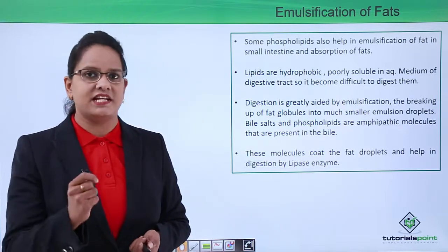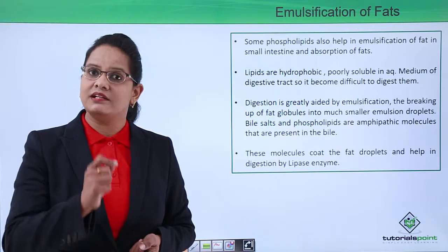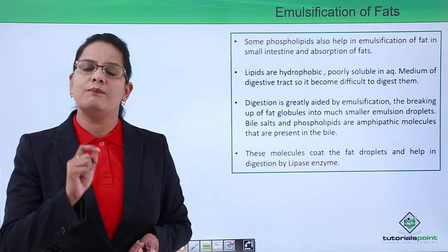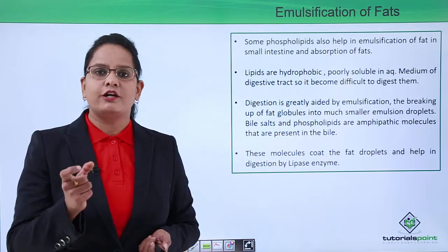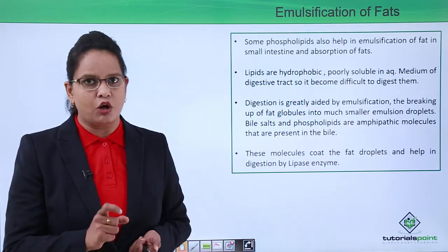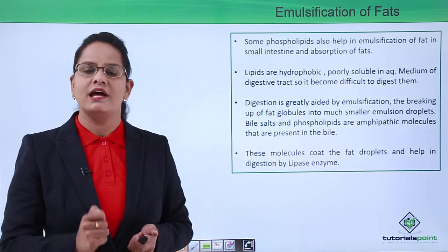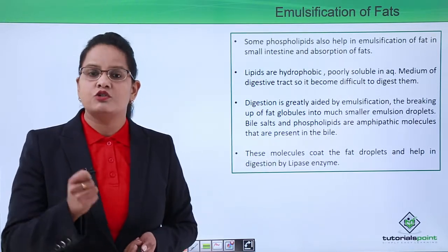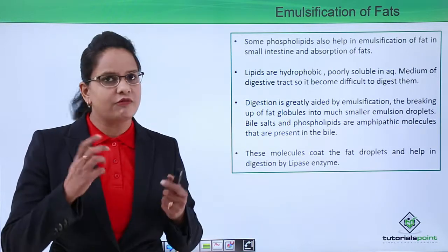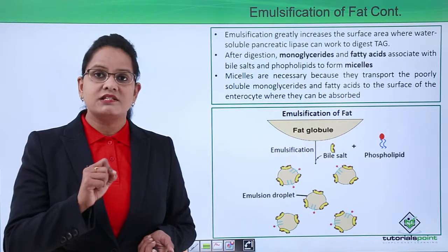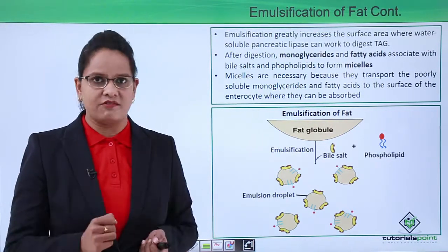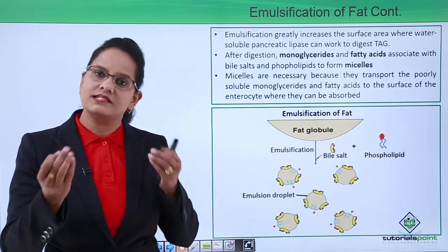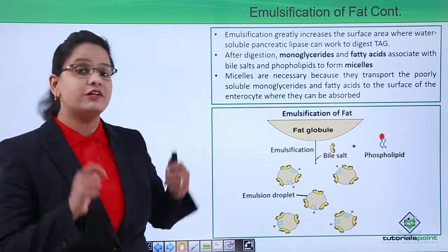Phospholipids provide the means to digest fats. The liver secretes bile juice, and phospholipid is a very important component of bile juice, along with bile salts. Large fat globules are emulsified — broken down into small globules — and get coated by phospholipids and bile salts. The enzyme that digests lipids is lipase, a water-soluble enzyme. It becomes easier for lipase to act on fat droplets when they are broken down. Emulsification increases the surface area, and lipase can easily act on and digest the fat.